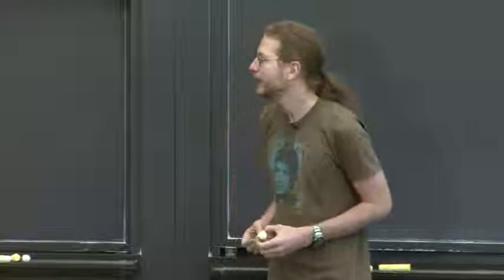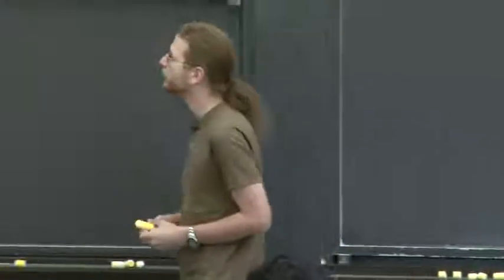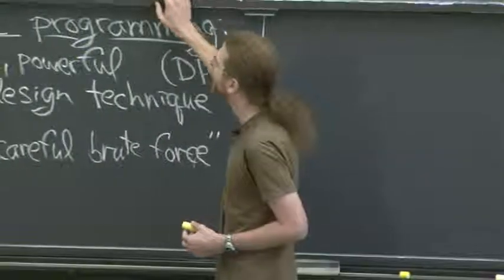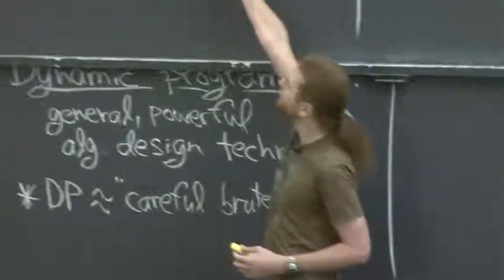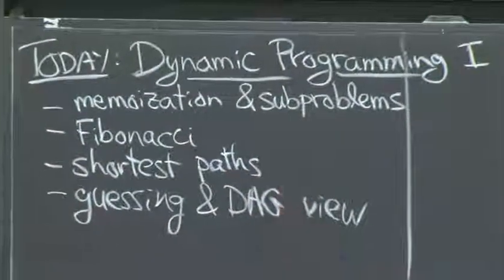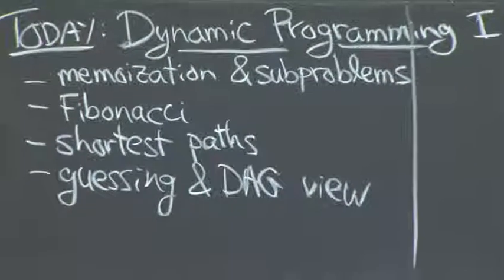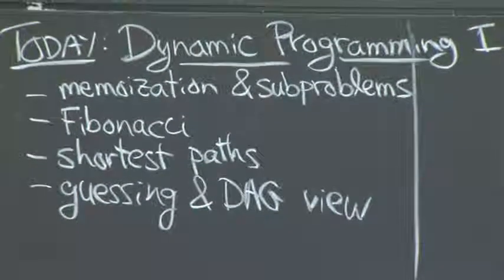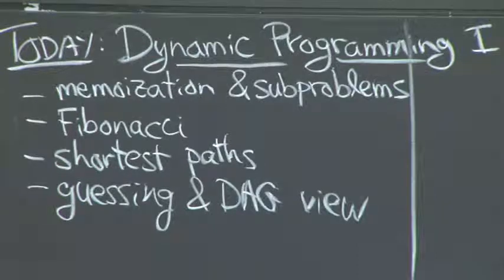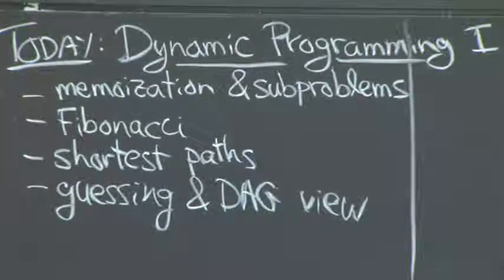We're going to be talking a lot about dynamic programming. There are a lot of different ways to think about it. We'll look at a few today. We're going to warm up today with some fairly easy problems that we already know how to solve, namely computing Fibonacci numbers, which is pretty easy, and computing shortest paths. And then in the next three lectures, we're going to get to more interesting examples where it's pretty surprising that you can even solve the problem in polynomial time.